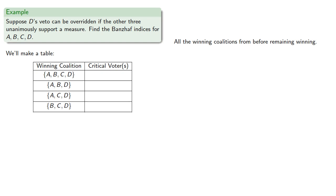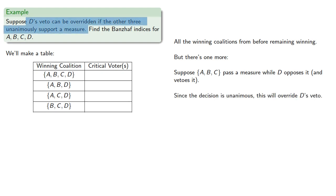But there's one more. Suppose A, B, and C pass a measure while D opposes it and vetoes it. Since the decision to pass a measure was unanimous, this will override D's veto. So A, B, and C is a winning coalition.